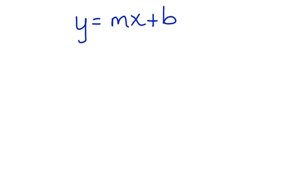Do you know how to write a function in slope-intercept form? First, let's take a look at an equation written in slope-intercept form. Slope-intercept form is y equals mx plus b, where m represents the slope and b represents the y-intercept.